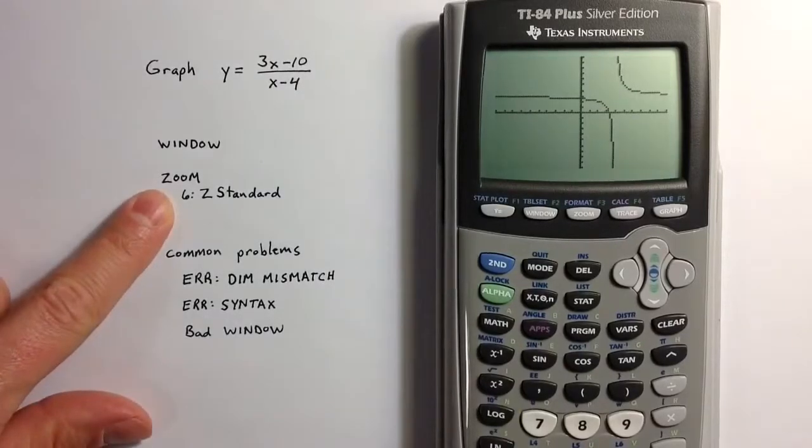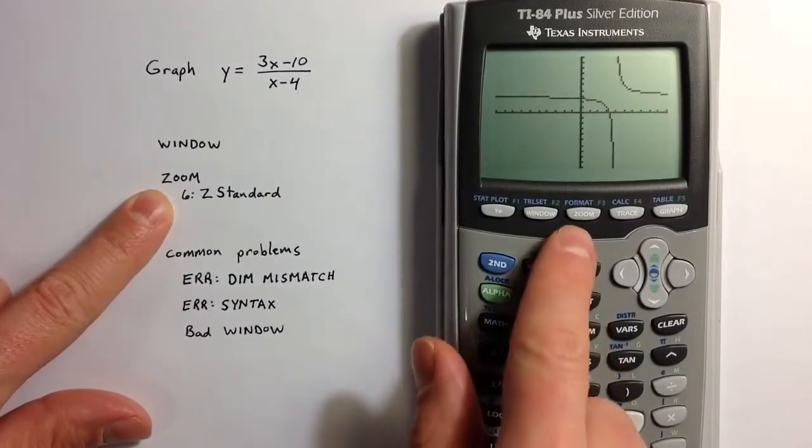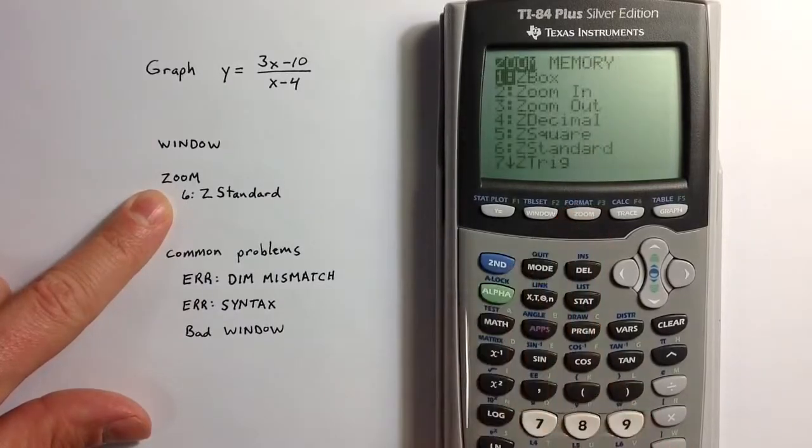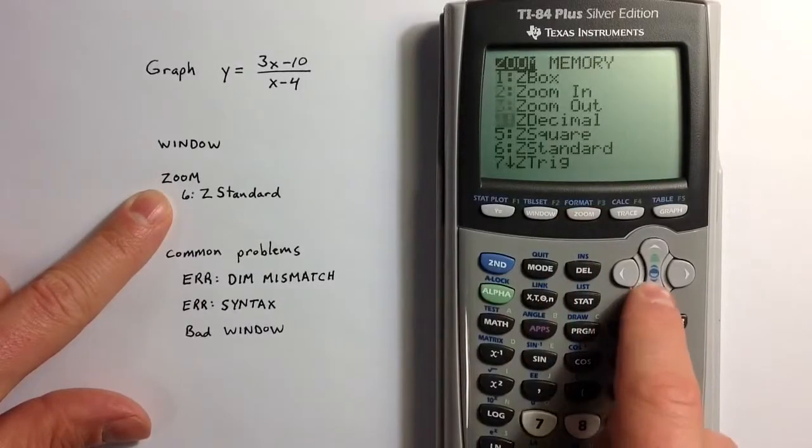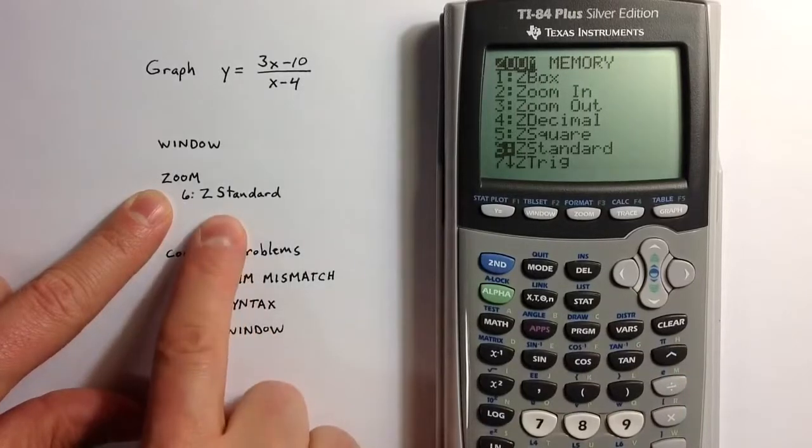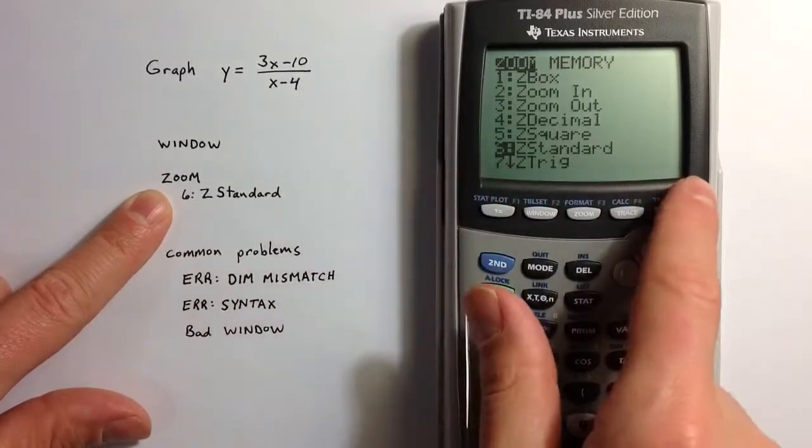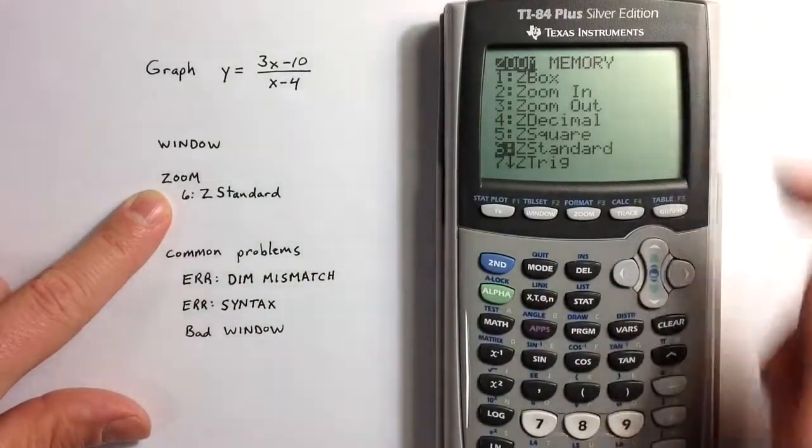To set up the window in that standard way, the zoom option 6 will automatically adjust the window so that it runs from negative 10 to 10 for x and negative 10 to 10 for y.